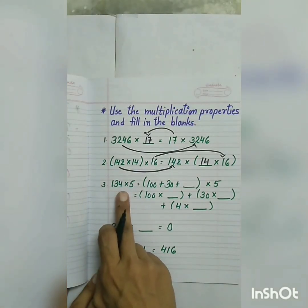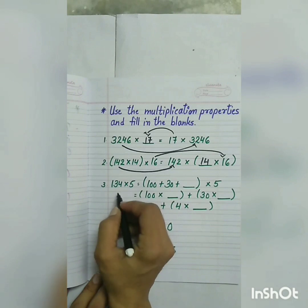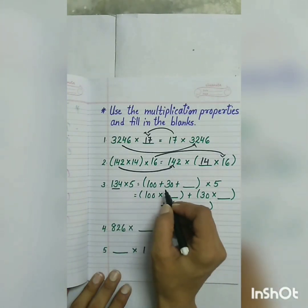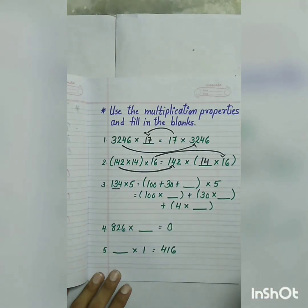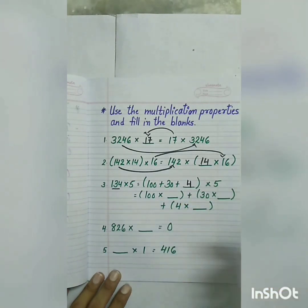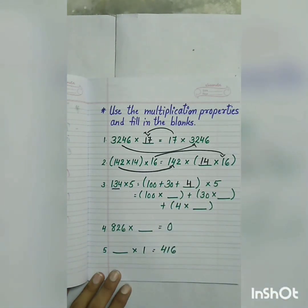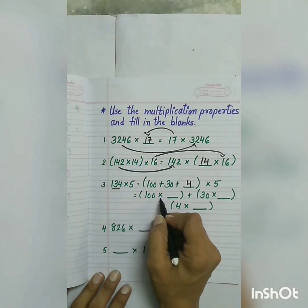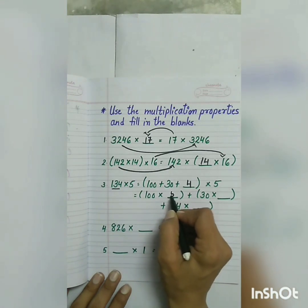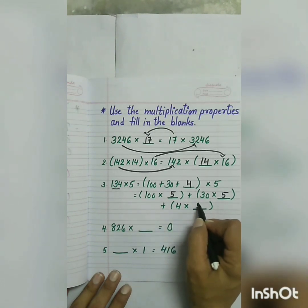Third: 134 multiplied by 5. We have expanded 134, so it becomes 100 plus 30 plus blank, bracket closed, multiplied by 5. The missing number is 4. If we further expand: 100 multiplied by 5, plus 30 multiplied by 5, plus 4 multiplied by 5. Which property is this? Distributive property. Very good.